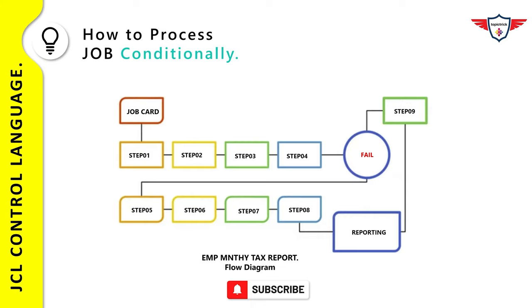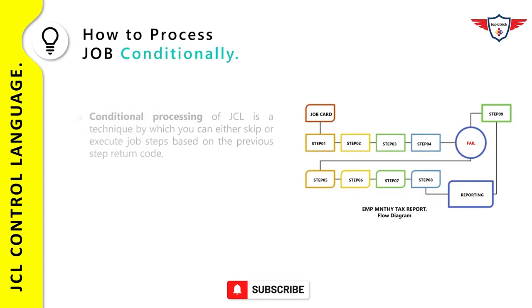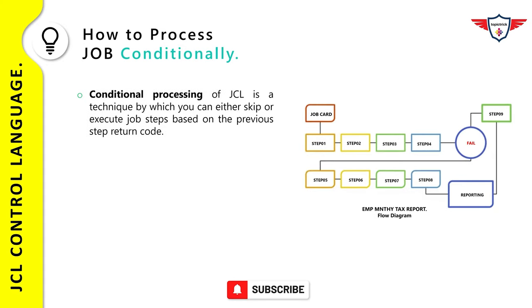In other words, you can specify whether to execute a job step based on the result of a previous job step. In the following example, I can execute step 09 based on the return code of any of the previous steps. So if my job fails on step 04, I can still execute step 09 based on the return code of step 04.